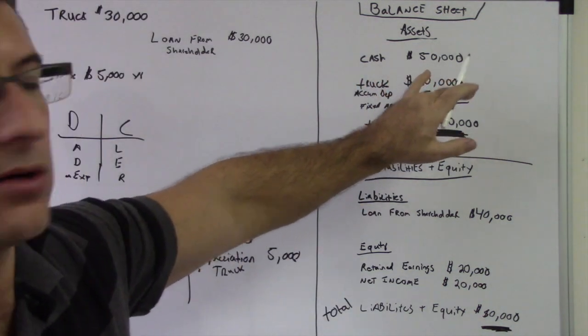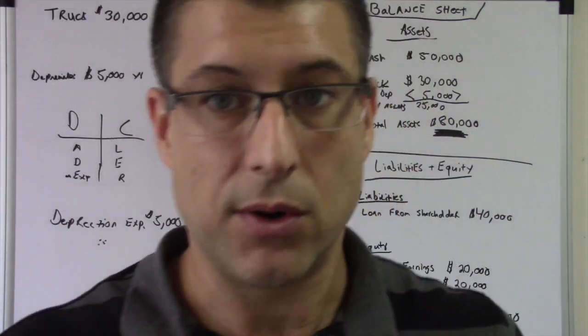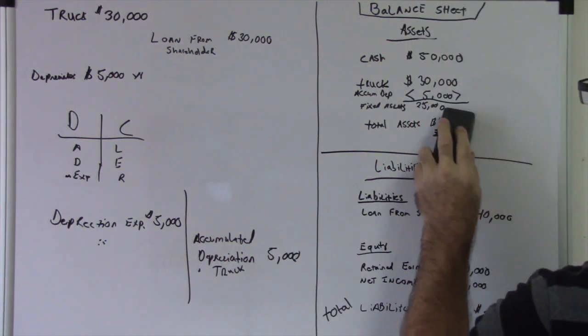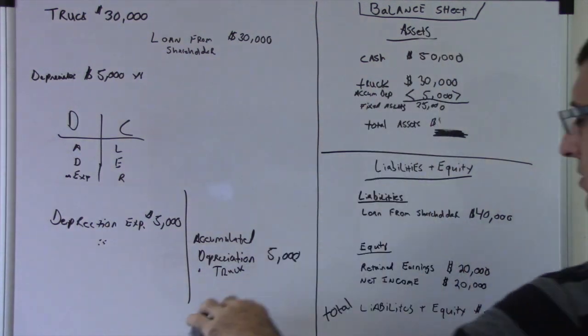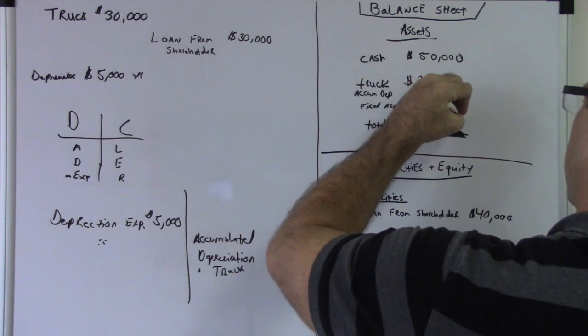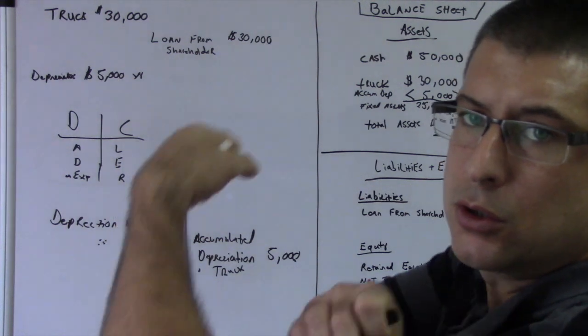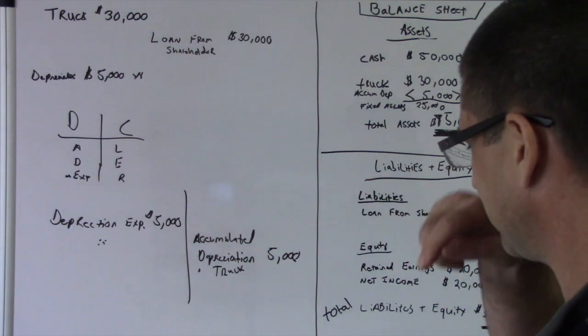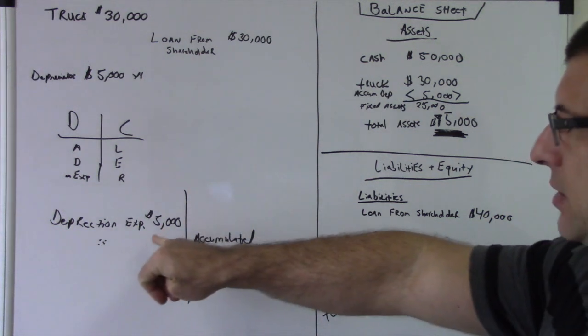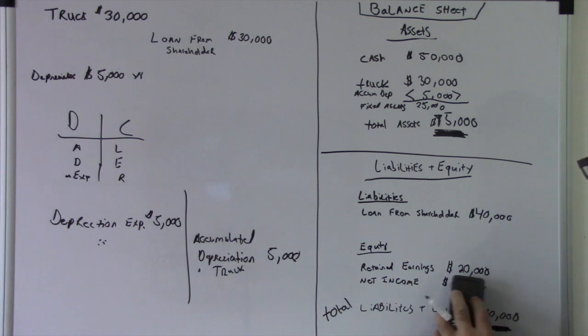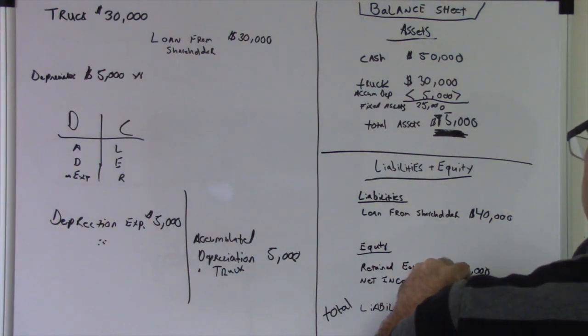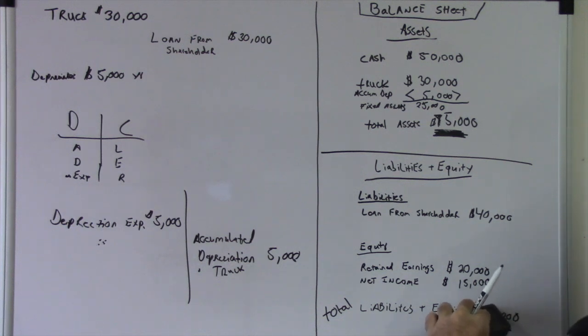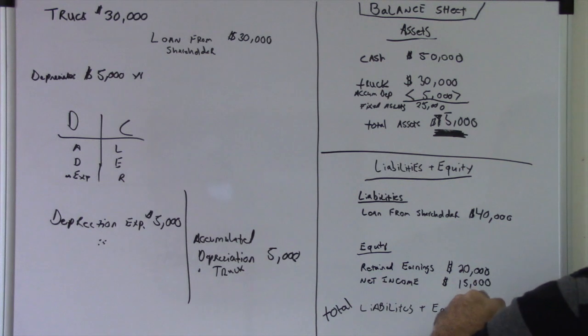Okay? So, you didn't touch the truck account. You just messed with the accumulated depreciation account for the truck. So, anyways. This isn't going to be $80,000 anymore. Because, you've got $15,000 in cash. And, $25,000 in fixed assets. So, that's going to be $75,000. So, your net income, because you had an expense of $5,000, this is going to change to $15,000. Because, an expense is going to lower your profit, your income. And, so, that's going to change this to $75,000.